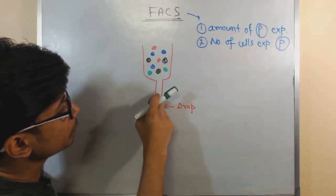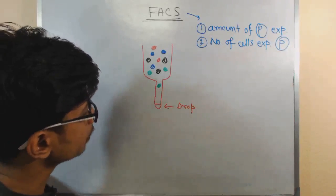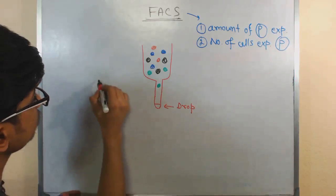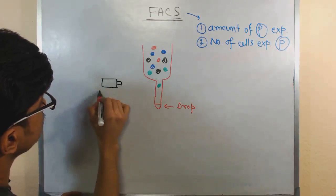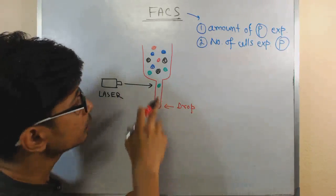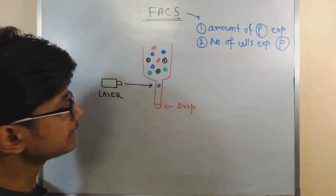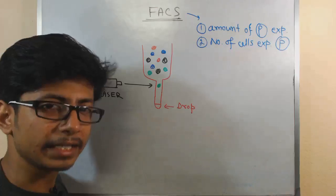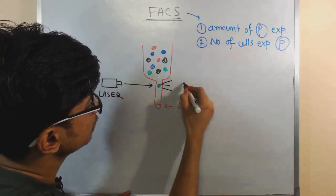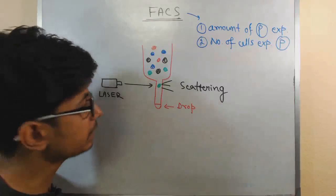All this mixture of cells slowly moves through this chamber. During the movement, there is a laser attached and this laser is passed through all those cells. As the laser hits the cell, the cell and the protein complex scatters its light - a kind of scatter in light that we can observe.